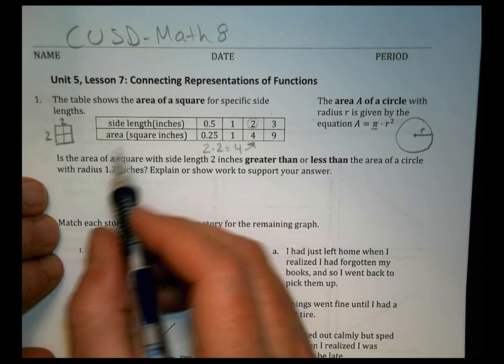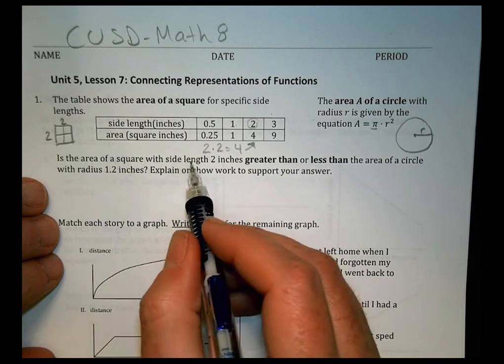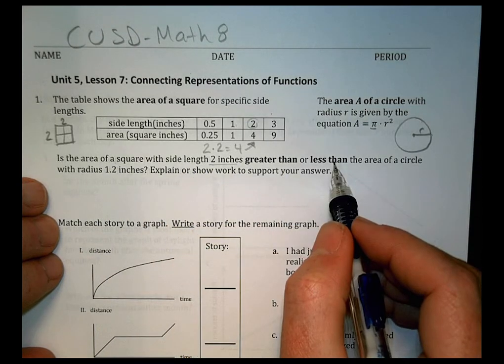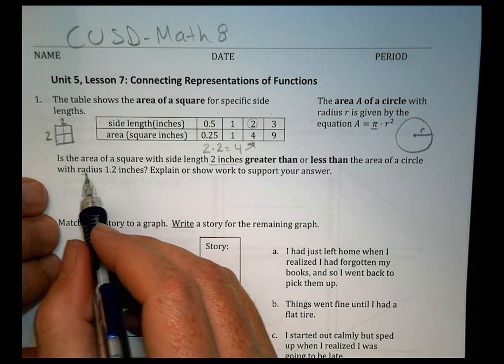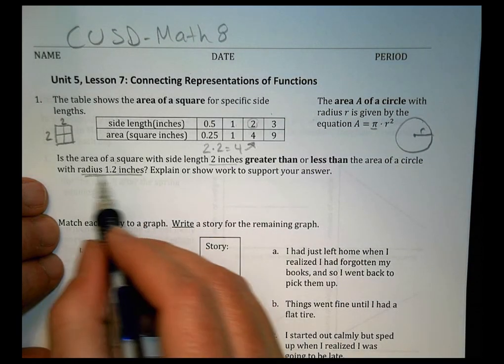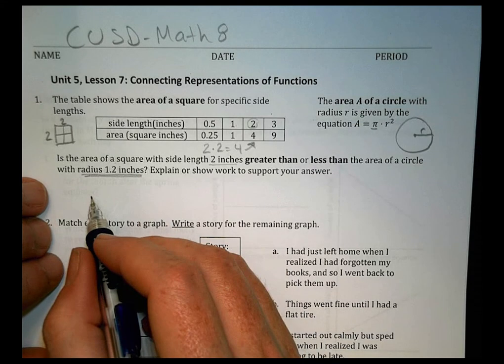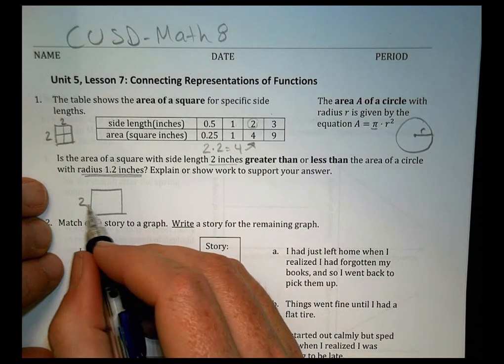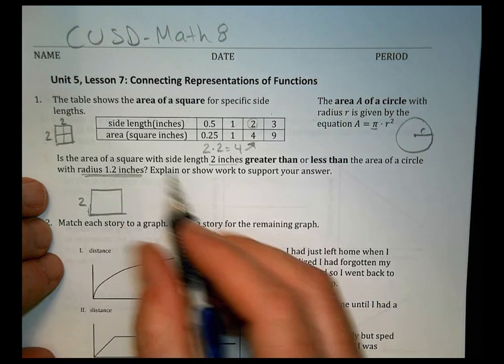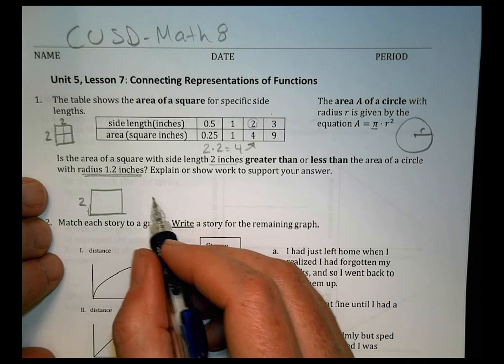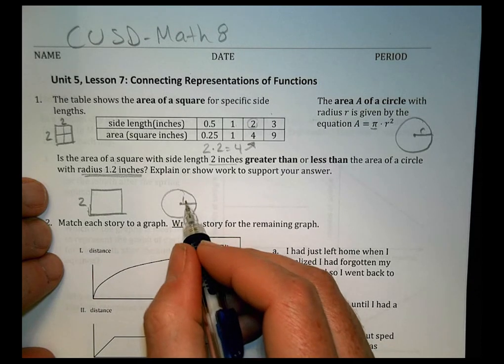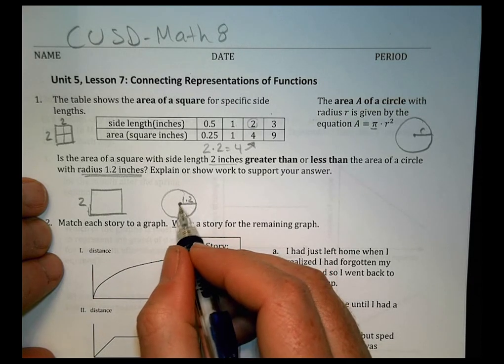The question here says, is the area of a square with side length 2 inches greater than or less than the area of a circle with radius of 1.2 inches? So basically we're comparing a square with side length of 2 to a circle with radius of 1.2.